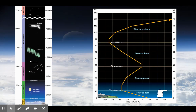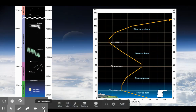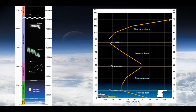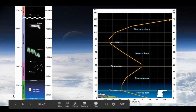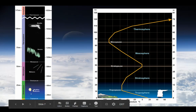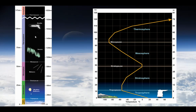This image shows all the different things that occur in the different parts of the atmosphere. Some of the highest mountains are in the troposphere. Weather balloons are launched and reach into the stratosphere. Meteors burn up in the mesosphere. Northern lights occur in the thermosphere, and the space shuttle would orbit in the upper parts of the atmosphere.